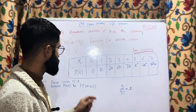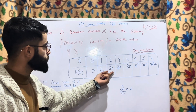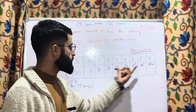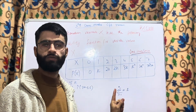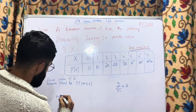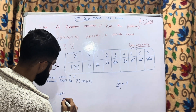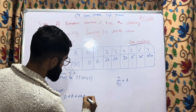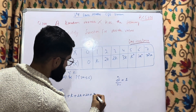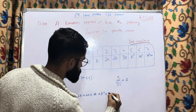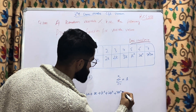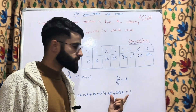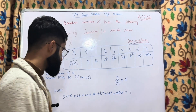The probabilities given are: 0, k, 2k, 2k, 3k, k², 2k², 7k² + k. Once we sum all these probabilities we should get 1. So we write: 0 + k + 2k + 2k + 3k + k² + 2k² + 2k² + 7k² + k = 1. The summation of all probabilities must equal 1.